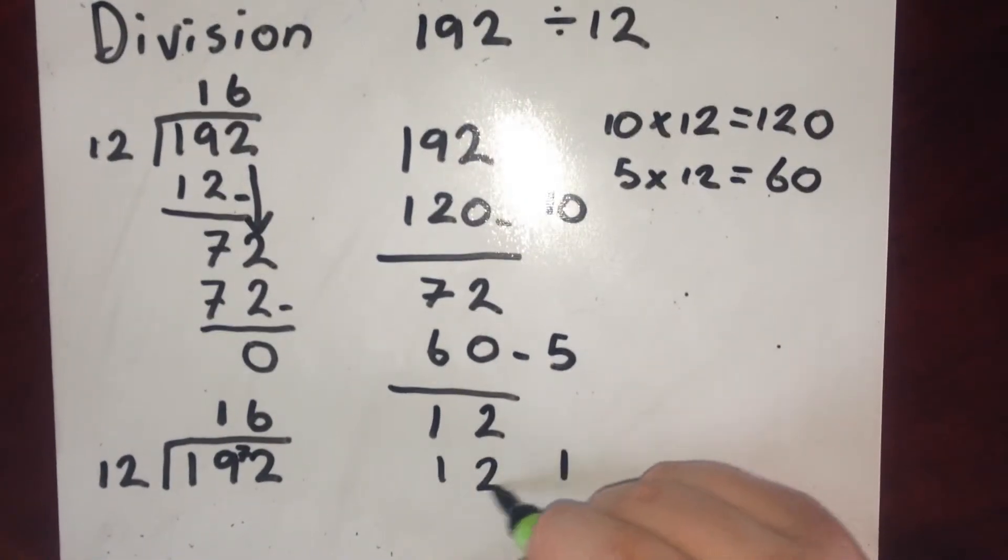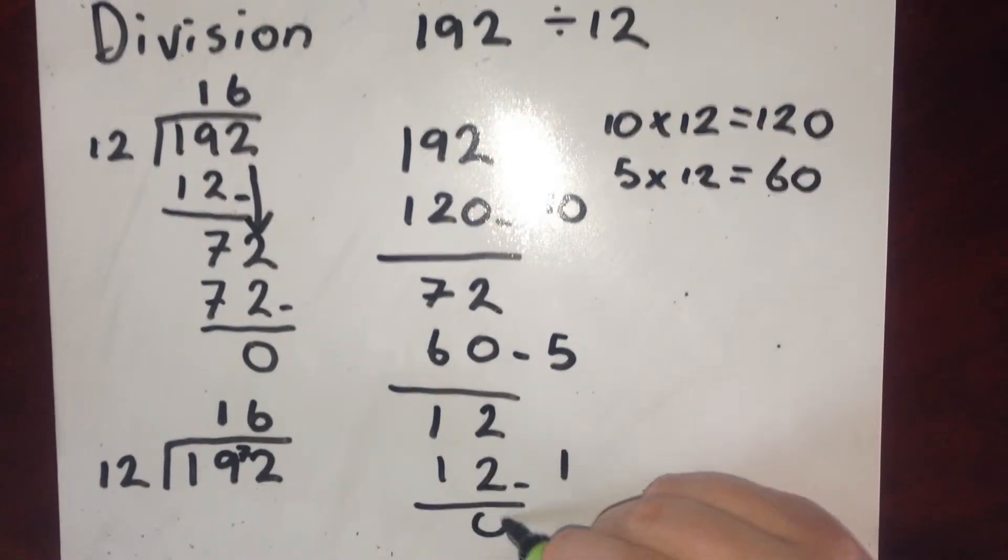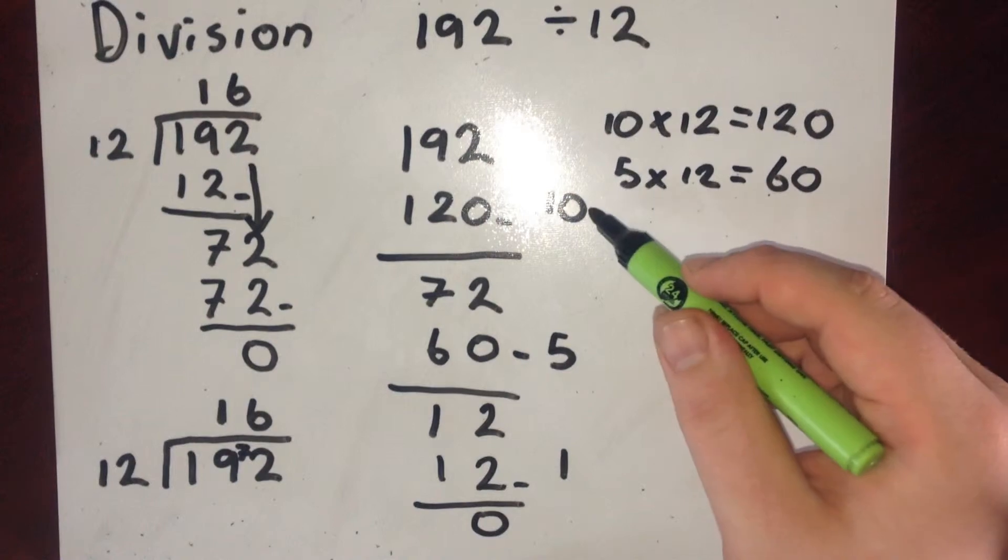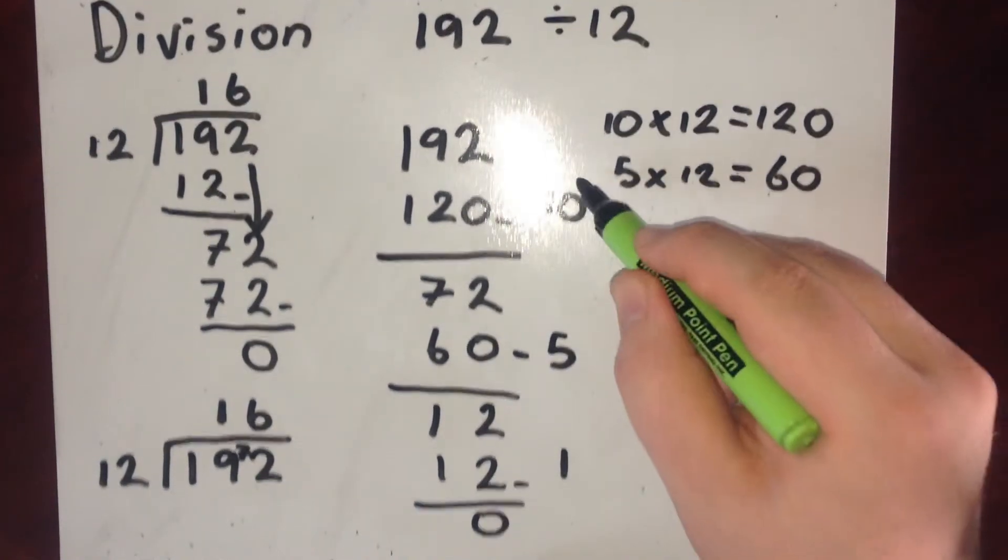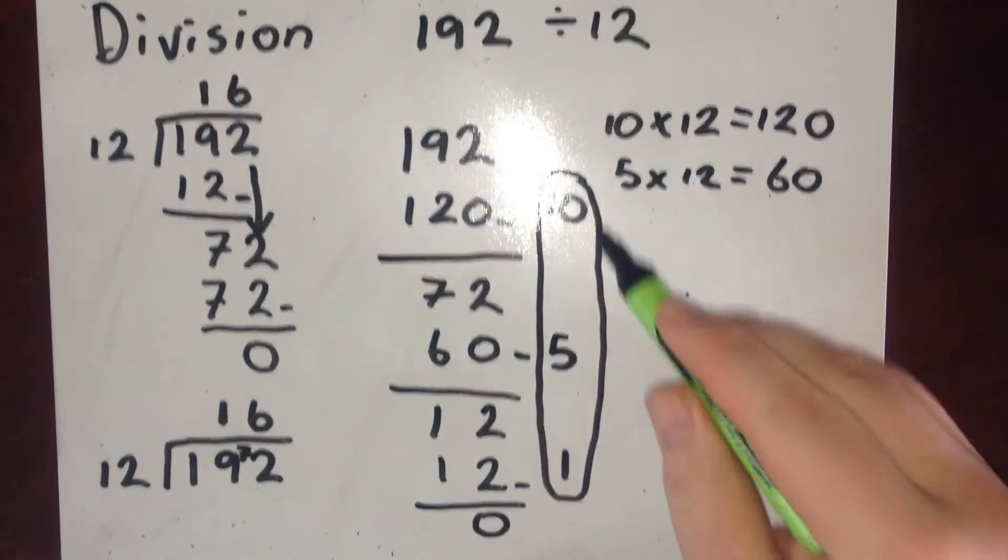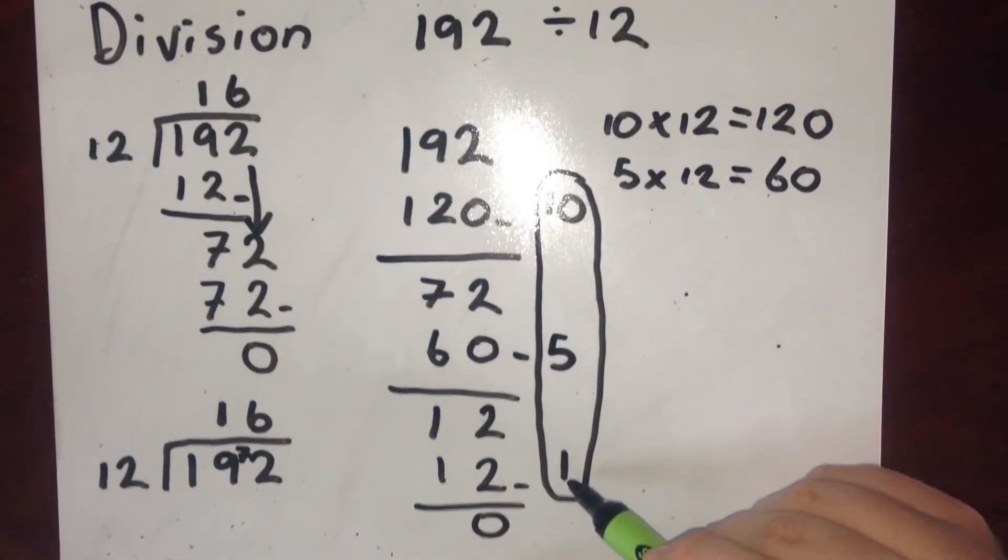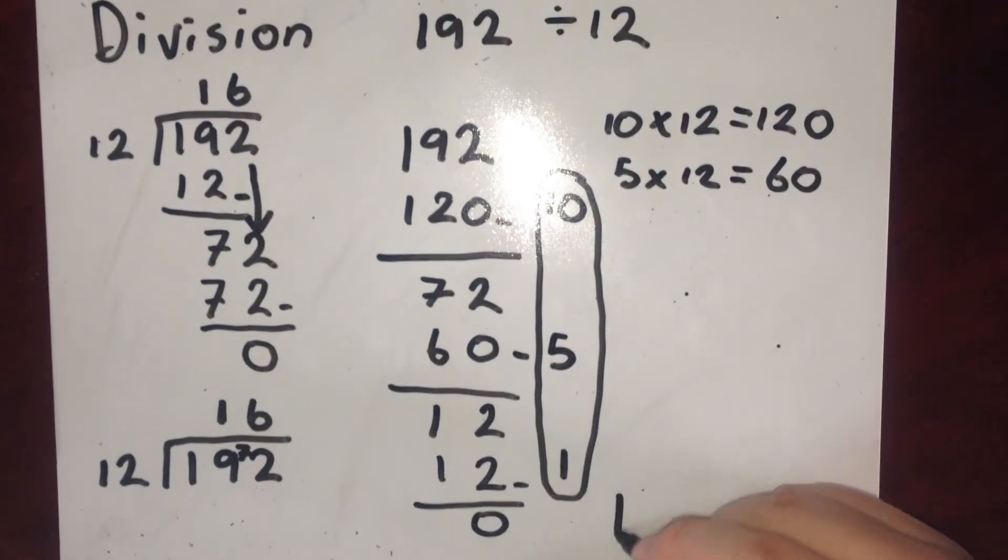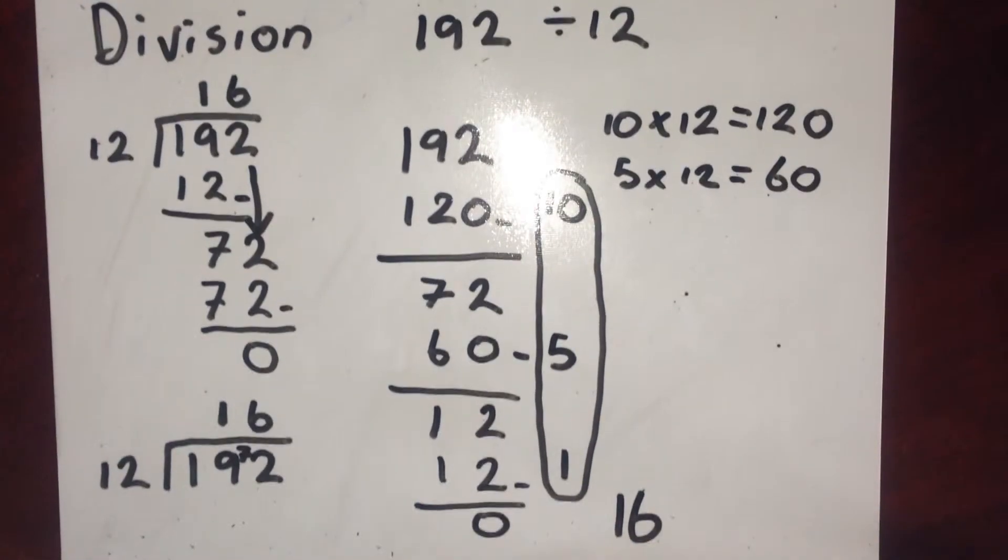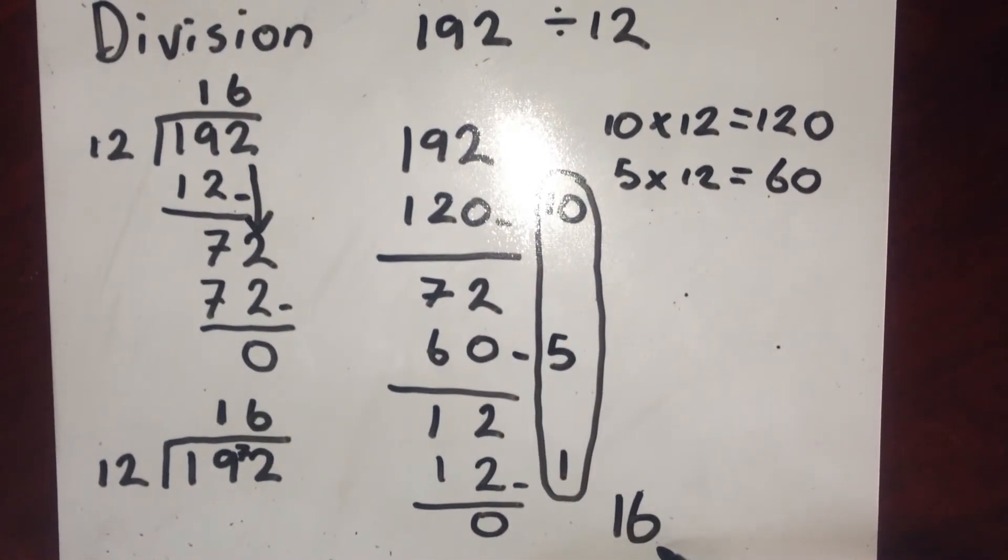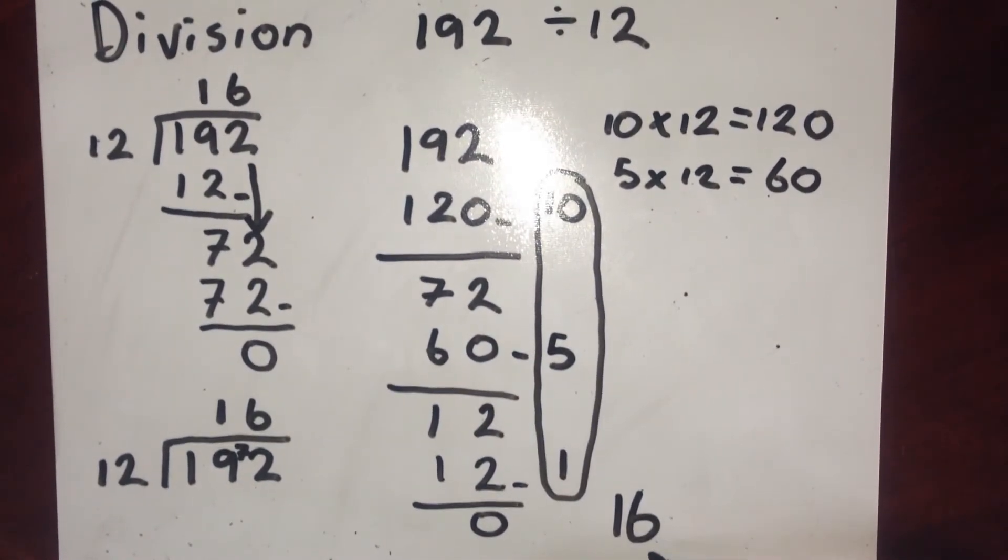So I'll take that 1 lot of 12 away. Left with 0. I know the answer's finished. And then I just see how many lots of 12 I took away. That's 10, 5, and 1. 10 plus 5 plus 1 is 16. So from 192, I've taken 16 lots of 12 away. So 16 is my answer.